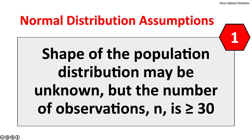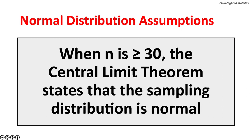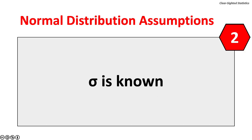There are two key normal distribution assumptions that must be met to use Z values. One, the shape of the population distribution may be unknown, but the number of observations must be greater than or equal to 30. When n is at least 30, the central limit theorem states that the sampling distribution will be normally distributed. Two, the population standard deviation must be known. If the population standard deviation is unknown, Z values should not be used — even when n is 30 or more. T values should be used instead.